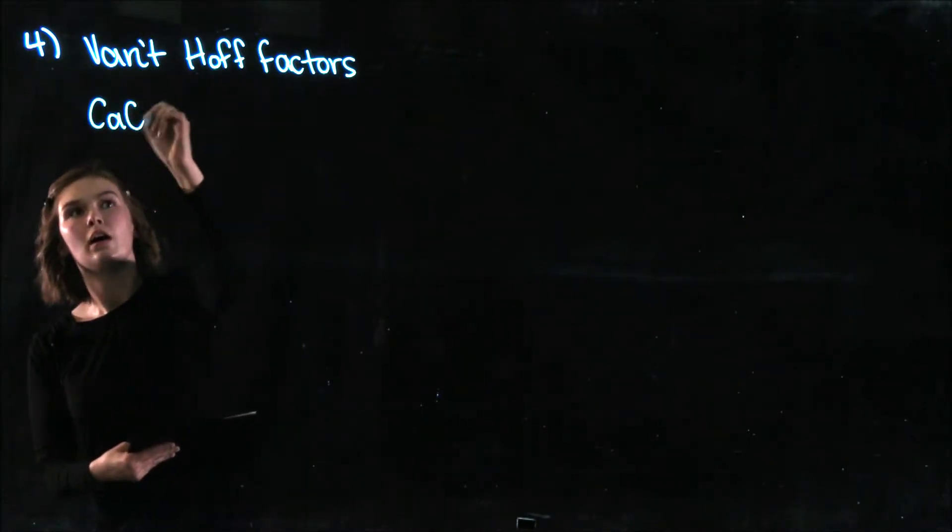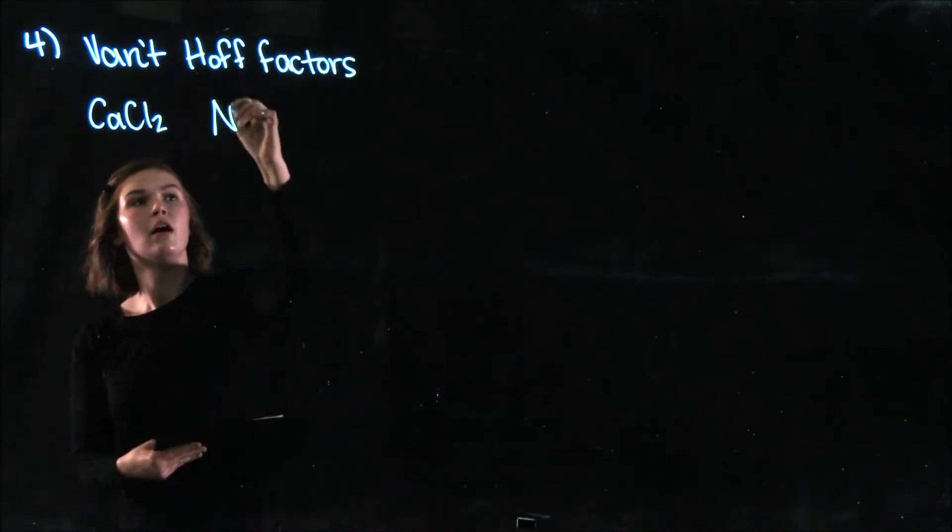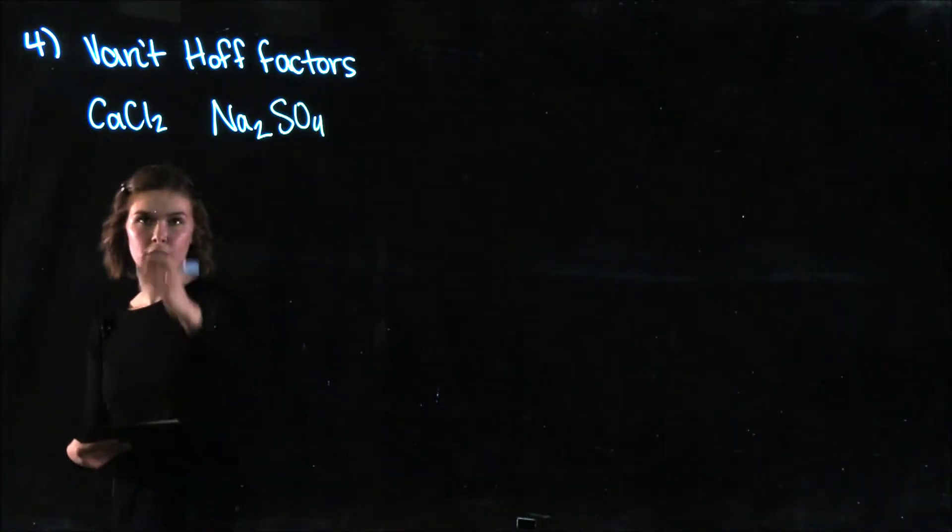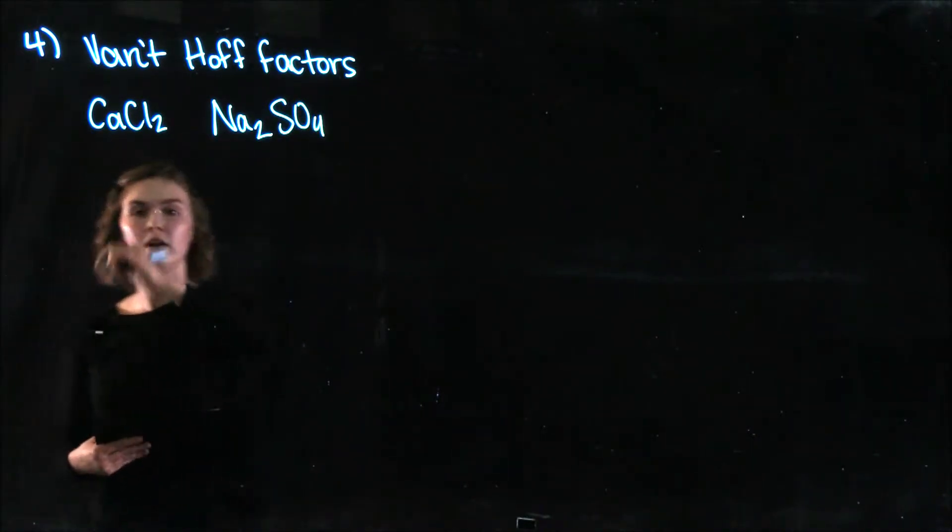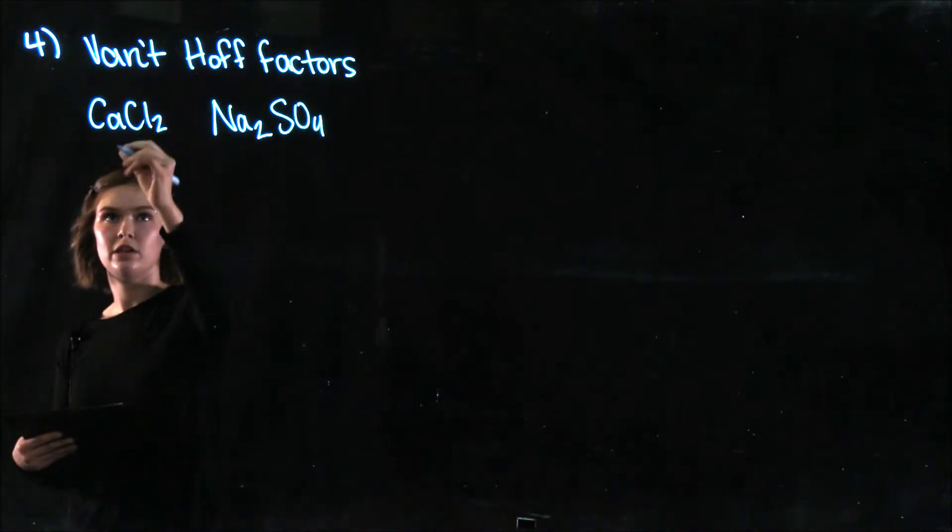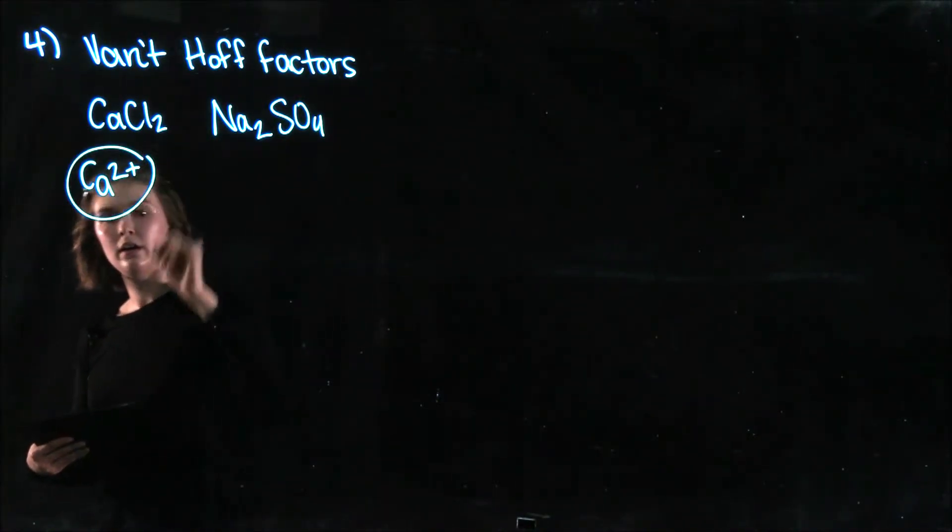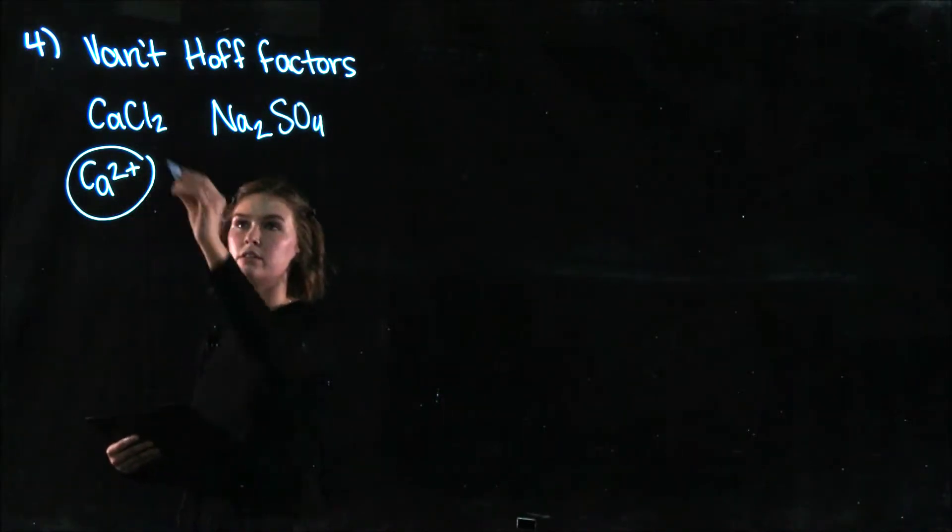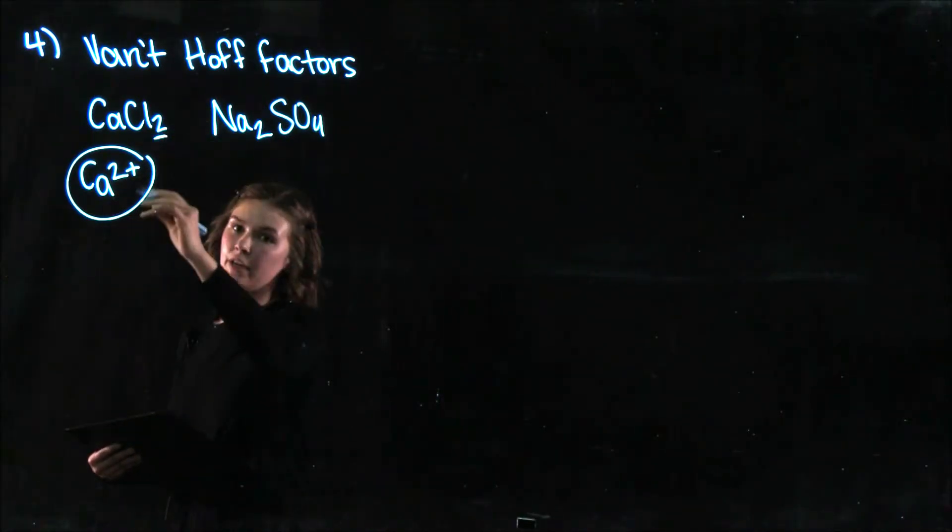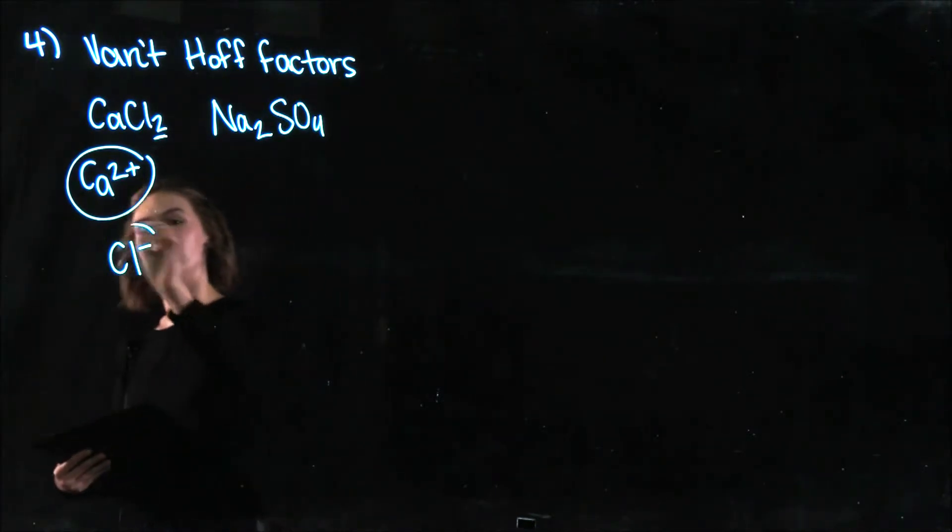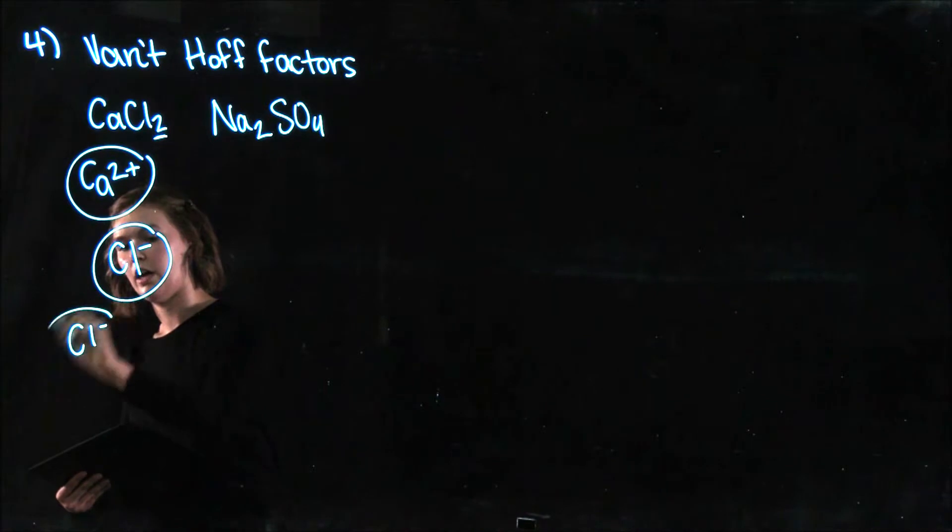So your two salts are calcium chloride and sodium sulfate. So we'll start with calcium chloride. Calcium chloride, when you put it in water, is going to dissociate into a calcium ion and then two chloride ions, which I know because there's a two here. So we're going to have chloride ions.